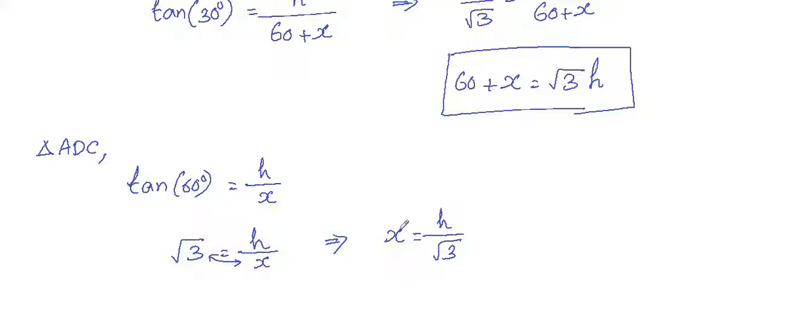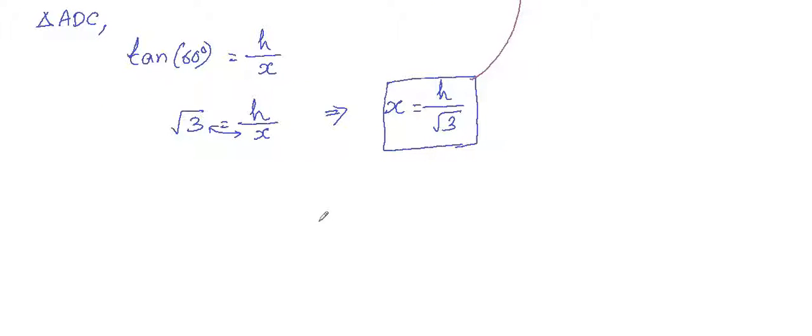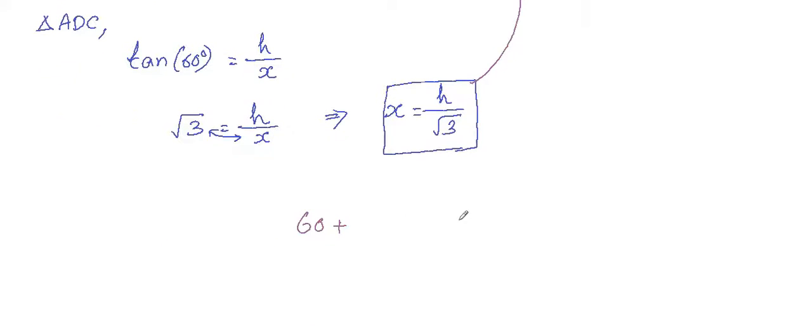Now just substitute this x value into the equation which we got earlier, like 60 plus x equals root 3h. So if we substitute this x value, we'll get 60 plus h by root 3 equals root 3h.